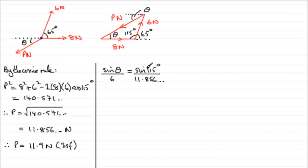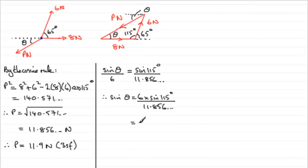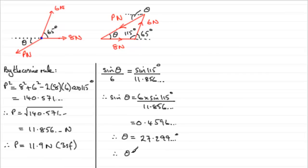All I need to do is multiply both sides by 6, giving sine theta equals 6 multiplied by sine of 115 degrees, divided by 11.856. Work that out and you get 0.4596. To get theta, take the inverse sine of that value and you get 27.299 degrees. Rounded to two significant figures, that is 27 degrees. That's one way of finding P and angle theta, but it's not the only way — we could also resolve.